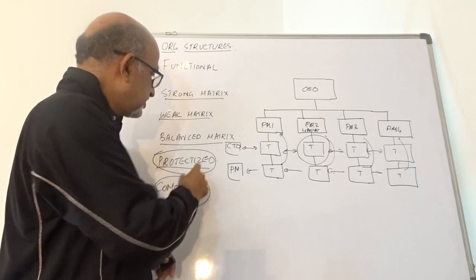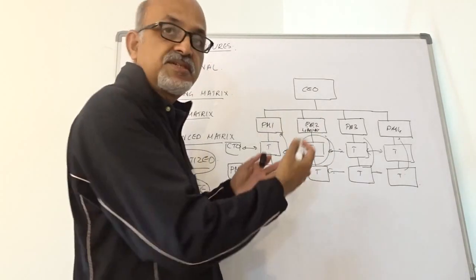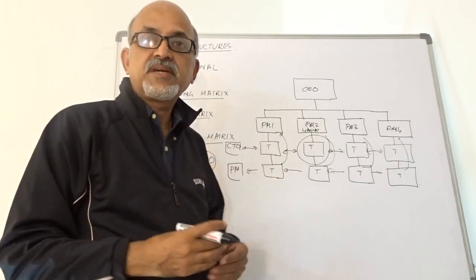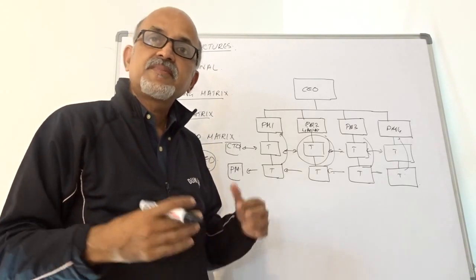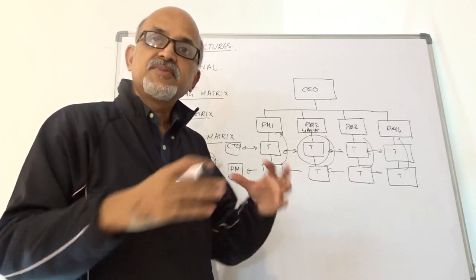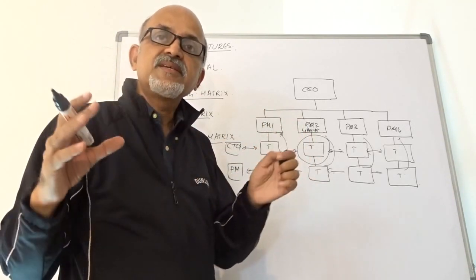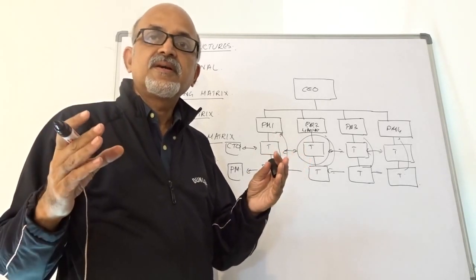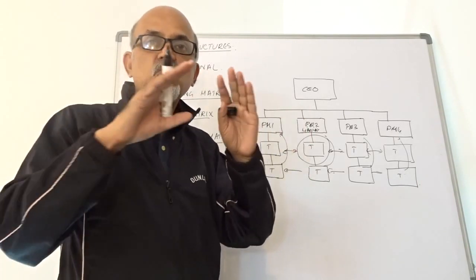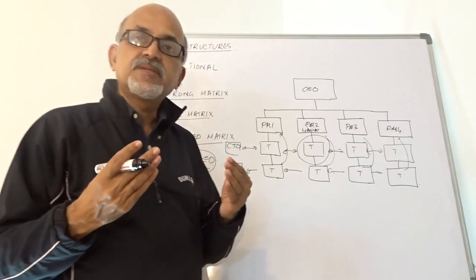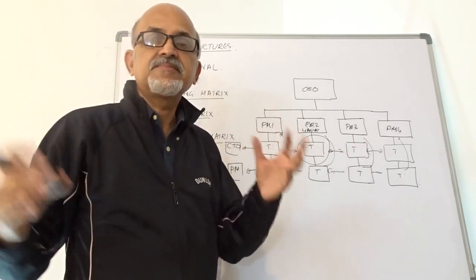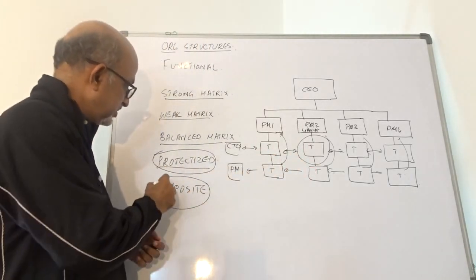Then we have a composite kind of organization. That means within an organization itself, some part can be projectized, some part can be matrix, and some part can remain as functional. Within the same organization, you may see traces of different organizational structures — it is not just one pure structure, but a mixture of all the structures happening in tandem. We call that a composite organization.